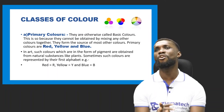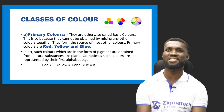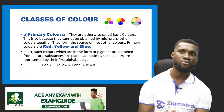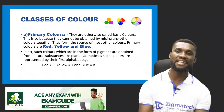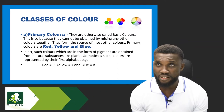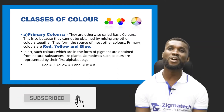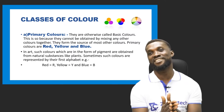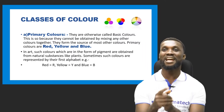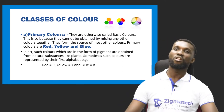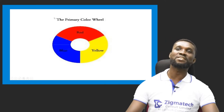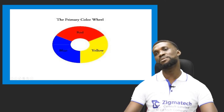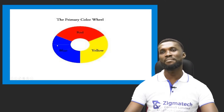In art, such colors in the form of pigment are obtained from natural substances like plants. Sometimes such colors are represented by their first alphabet — red is represented with R, yellow with Y, and blue with B. That is why you have RYB as the primary basic color. This is the color wheel of the primary color: red flows down to yellow, and then down to blue.